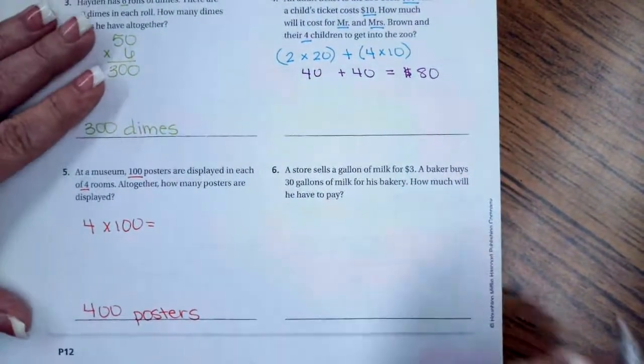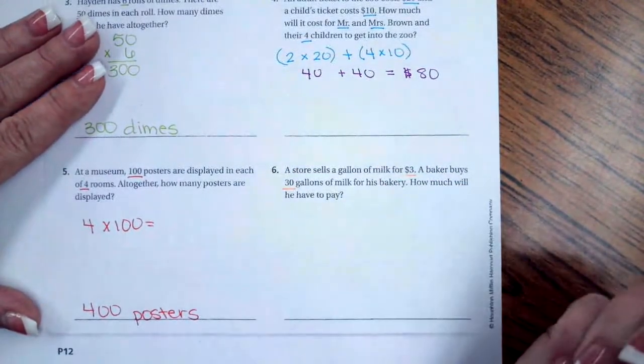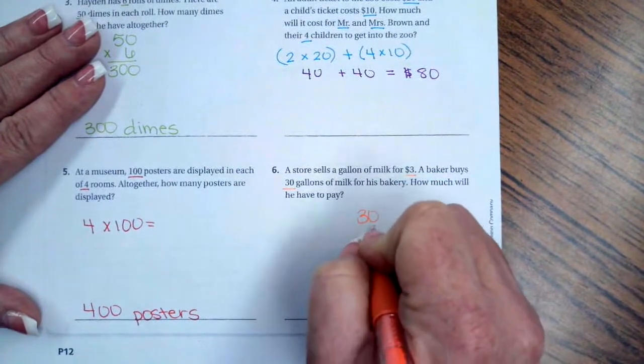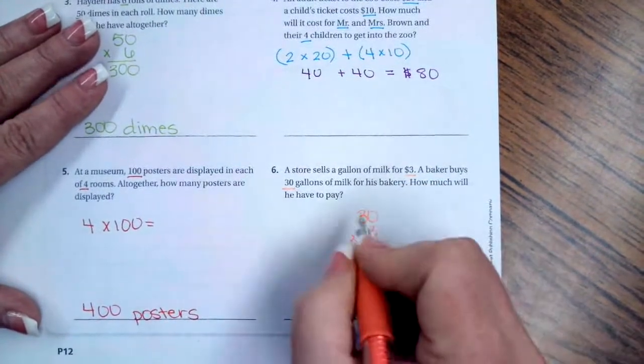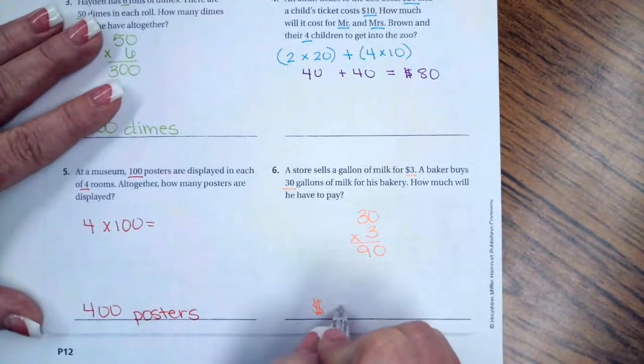A store sells a gallon of milk for $3. A baker buys 30 gallons of milk for his bakery. How much will he have to pay? 30 gallons, $3 each, multiply, 3 times 0 is 0, and 3 times 3 is 9. It's going to be $90.